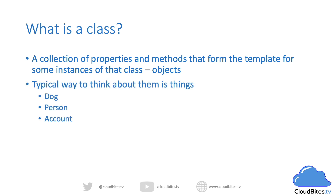A good way of thinking about objects is to think about them as things. So we might have a class that defines a dog, and we can then have instances of our dog class which would be our objects, such as Fido or Rover. Similarly, we can have a person class and have instances of our person class to get person objects, and they could be things like Paul, Lucy, or John.